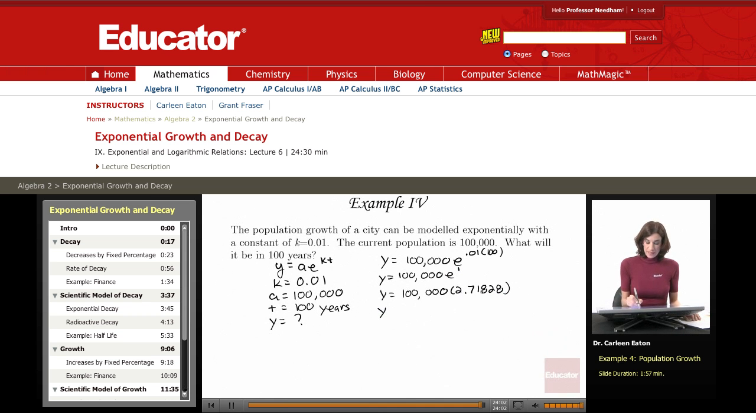Then I go ahead and multiply this times 100,000 to get 271,828 will be the population in 100 years.